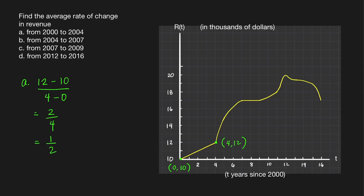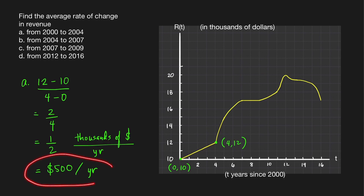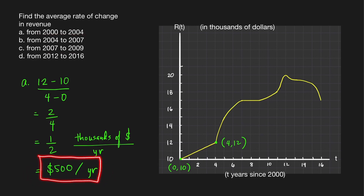What is the unit of this number? The unit is the unit of the revenue, which is in thousands of dollars, over the unit of the denominator — the unit of t, which is in years. So this is the same thing as one-half times $1,000 per year, and that is $500 per year. The units of the average rate of change are the units of your output over the units of your input — revenue over time. This means that on average from 2000 to 2004, the revenue is increasing by $500 per year.